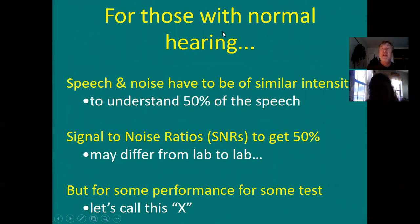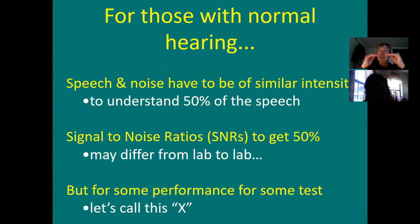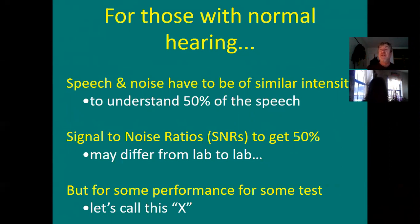For those with normal hearing, if speech and noise are of similar intensity, you have a 0 dB signal-to-noise ratio. If the speech is 60 and the noise is 60, they are the same — 0 dB SNR. A normal hearing person will understand half of the speech in that situation. If you make the signal-to-noise ratio plus 5 — in other words, if the noise is 60 and the speech is 65 — you're going to get all the words.